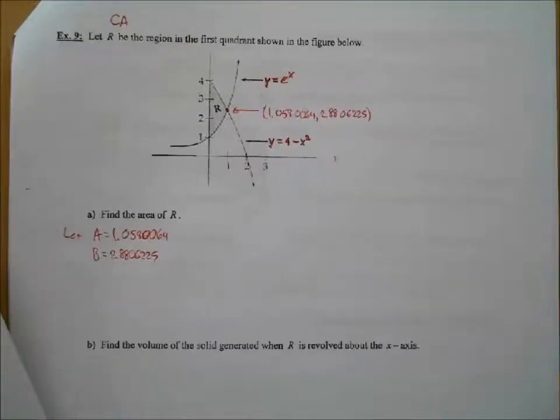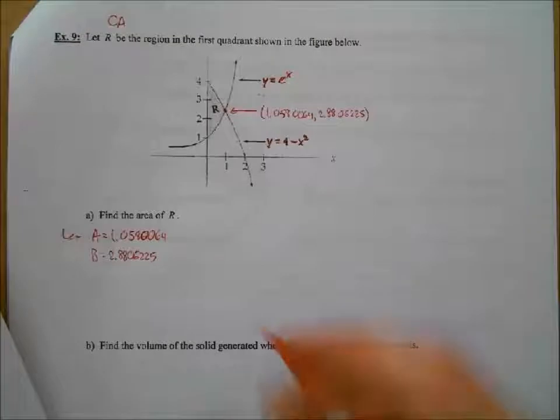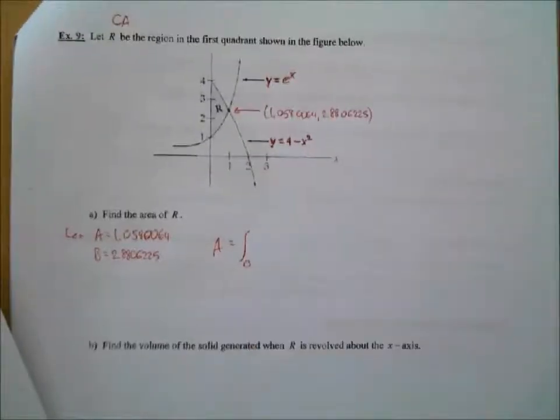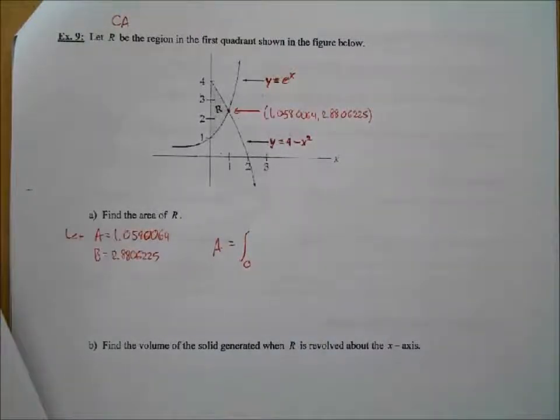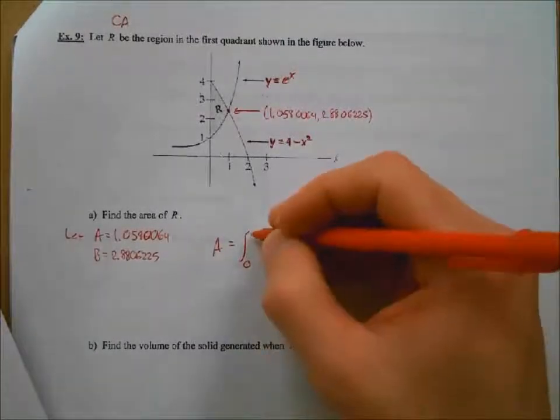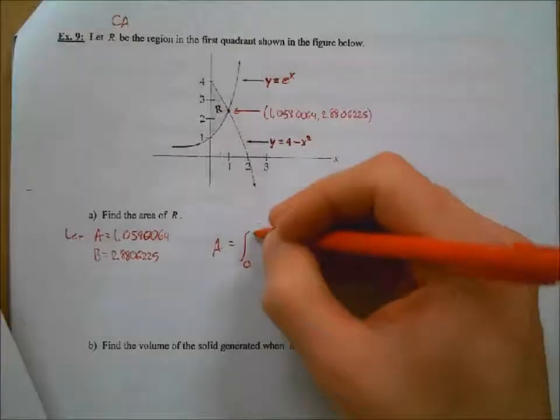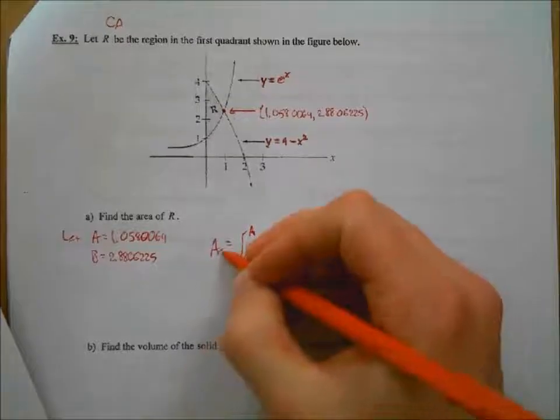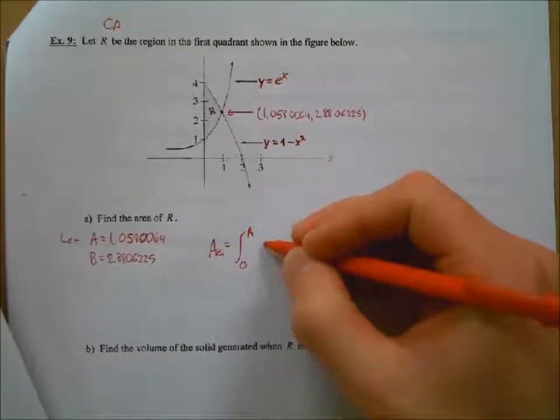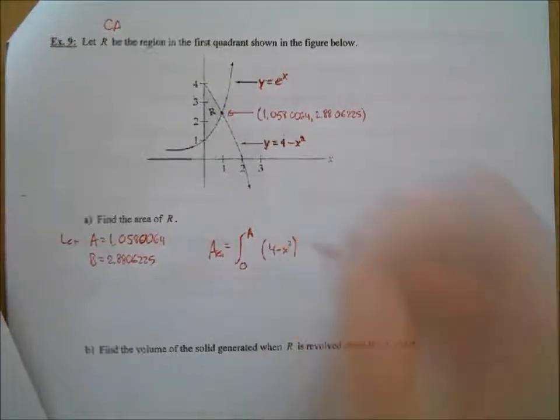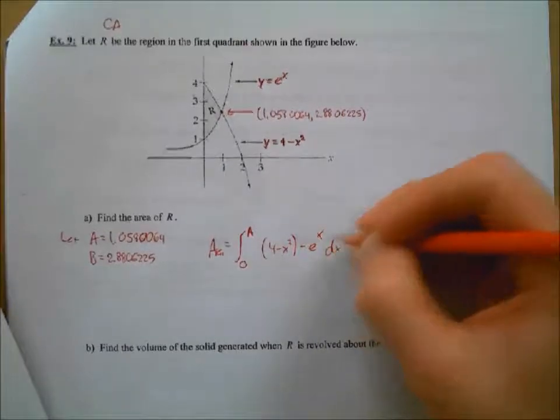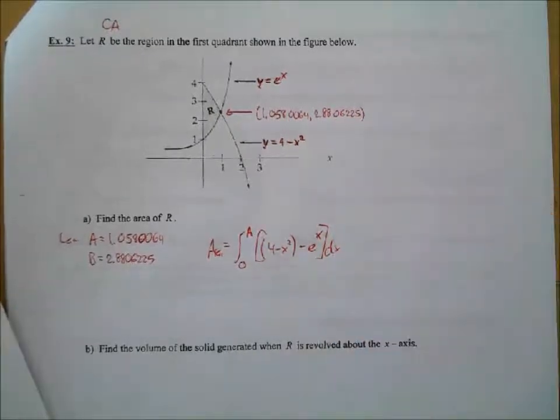So what would our set up be for the integral for letter A? Any volunteers? Yes, Emily, a brave soul. Okay, so it would be area equals from 0 to A, I guess. From 0 to the A, whatever that A value is. So I'm going to use capital A there. And then in parentheses, 4 minus x squared minus e to the x dx. Okay, very good. And I'm going to put some additional grouping symbols here just for that.